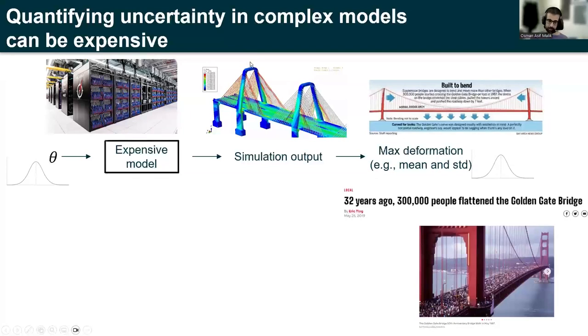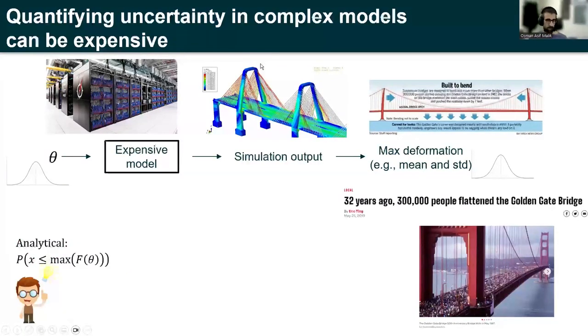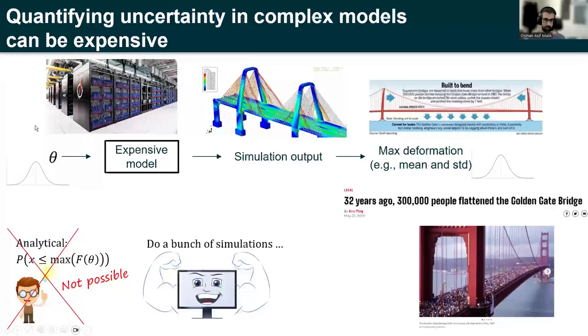So how can we solve this problem to understand this? One approach that we might try, if you're a little bit more mathematically inclined, is to say, can we solve this analytically? Can we figure out the distribution of this output deformation analytically? And this is typically not possible. The reason is quite simply that the model is expensive, it's complicated, and we can't do it analytically for that reason. If you're more of a computational person, maybe you want to do a bunch of simulations and then compute these statistics like mean and standard deviation that we care about. And that's something we can try, but we're assuming that this is not a good idea because we have a model that is really expensive. So we want to really avoid running the model many times.